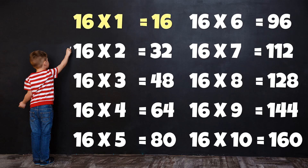Table of 16. 16 1's are 16. 16 2's are 32. 16 3's are 48. 16 4's are 64. 16 5's are 80. 16 6's are 96. 16 7's are 112. 16 8's are 128. 16 9's are 144. 16 10's are 160.